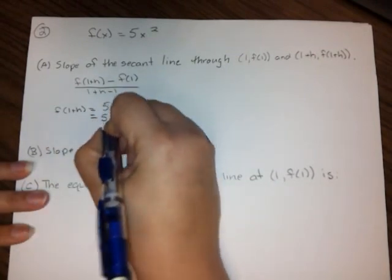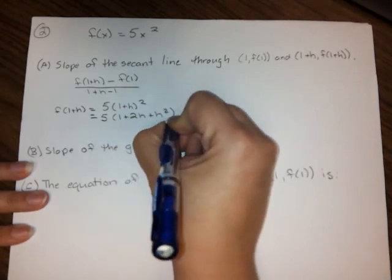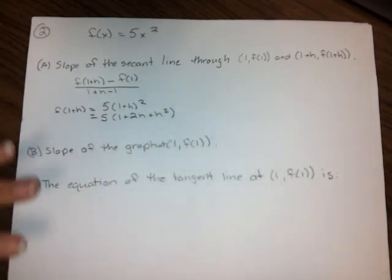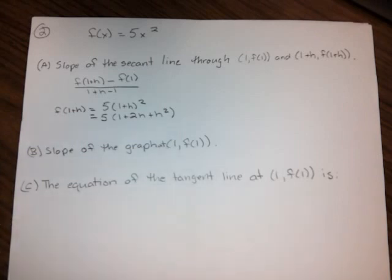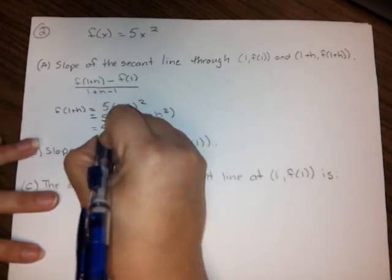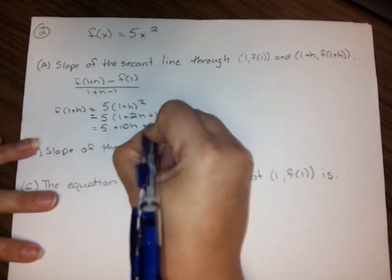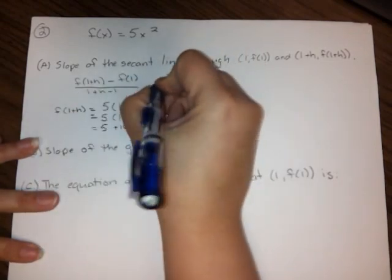What does that equal? That's 5 times (1 plus 2h plus h squared). If you're not sure about that, you need to work on some basic algebra skills. Shoot me an email and I can get you some resources to help you practice. Because the faster you can do these things, the faster you're going to be able to solve these problems. So this gives me 5 plus 10h plus 5h squared.